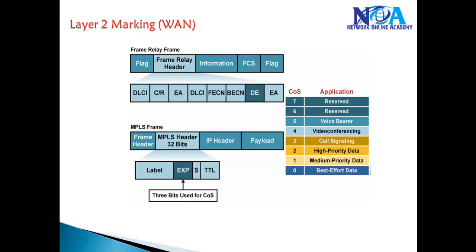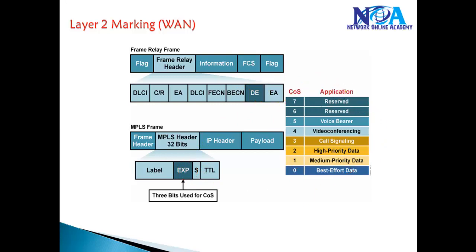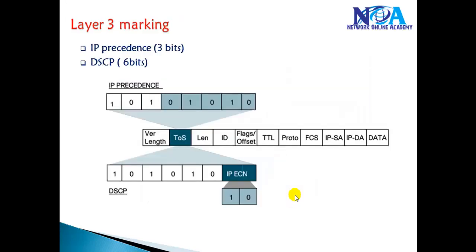To summarize Layer 2 markings: whether it is a switched network CoS, Frame Relay Discard Eligibility, or MPLS Experimental bits, you get eight different values. We typically use zero through five, where five is the highest priority and zero is the least priority traffic.